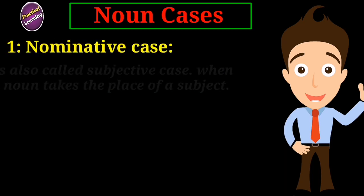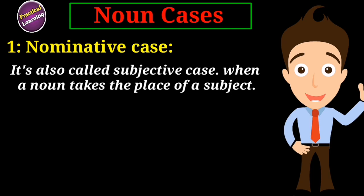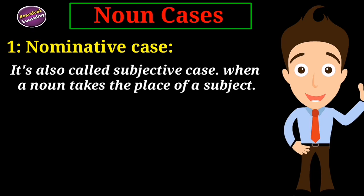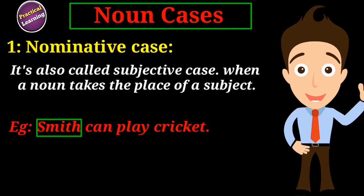Nominative case. The nominative case of a noun is also called the subjective case. In simple words, when a noun takes the place of a subject, it is called the nominative case or subjective case of a noun. For example, 'Smith can play cricket.' Here, the noun Smith has taken the place of a subject, so it is the nominative or subjective case.